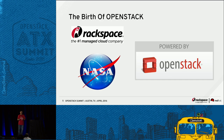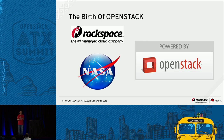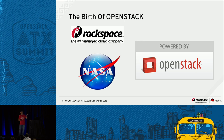They made a decision to use Python as the underlying programming language. At roughly the same time, NASA had an initiative to create a private cloud. They evaluated platforms that were out there — Cloudstack, Eucalyptus, and others — and decided none quite fit their needs. So they decided to build their own private cloud, and they independently also chose Python as their programming language.